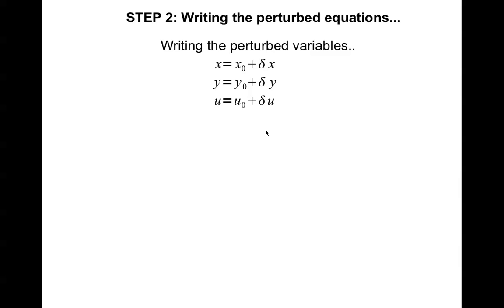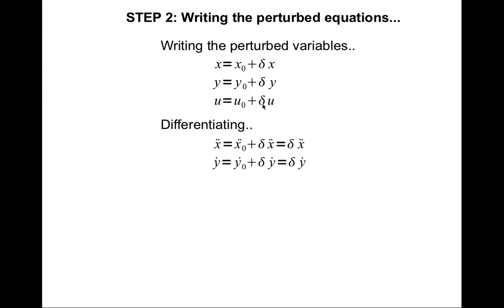For the perturbed equations, we go to the equilibrium point and disturb each variable by a small amount delta. So x is disturbed from the equilibrium point x-naught with delta-x, y with delta-y, and u with delta-u. To do this we also need the second derivative of x and the first derivative of y, so we differentiate the first and second equations. At equilibrium, x-naught double-dot equals zero and y-naught dot equals zero, therefore x-double-dot equals delta-x double-dot and y-dot equals delta-y dot.